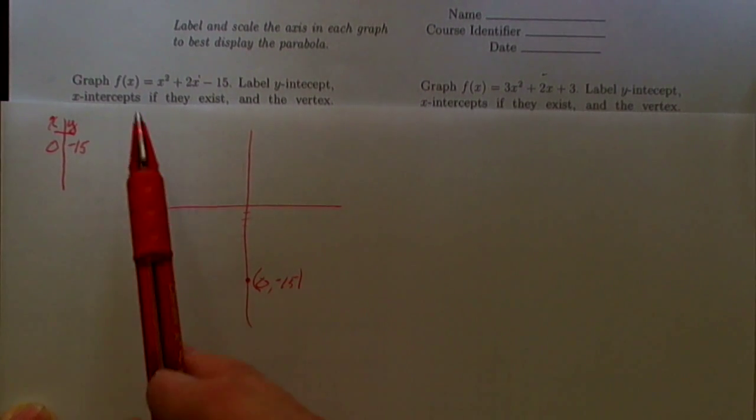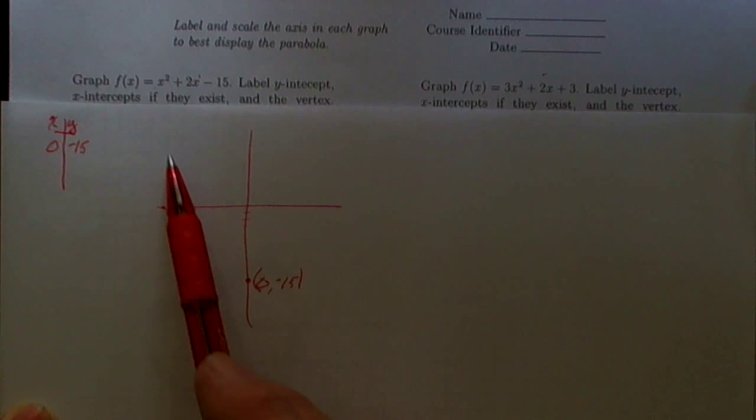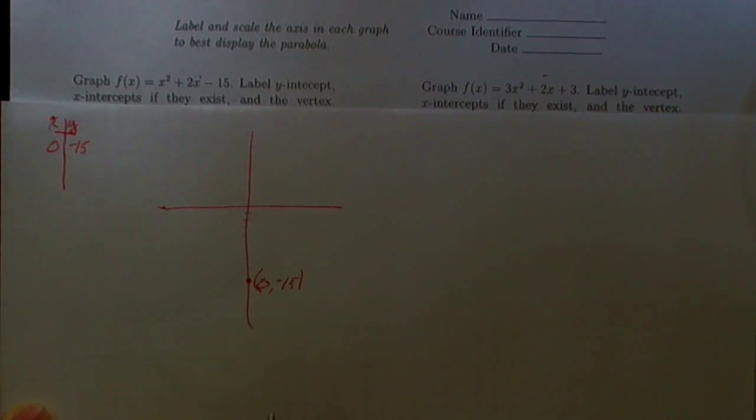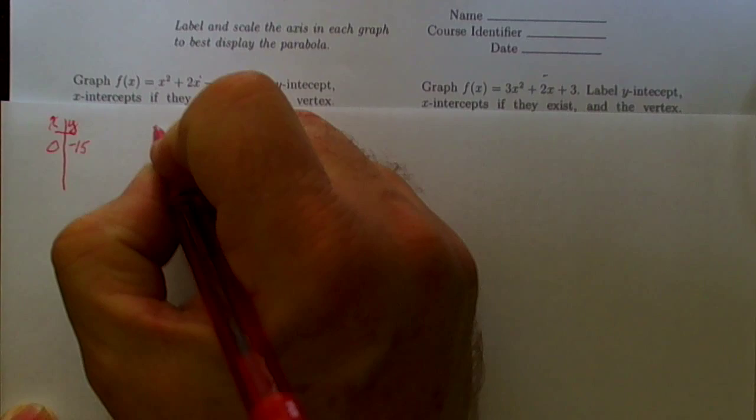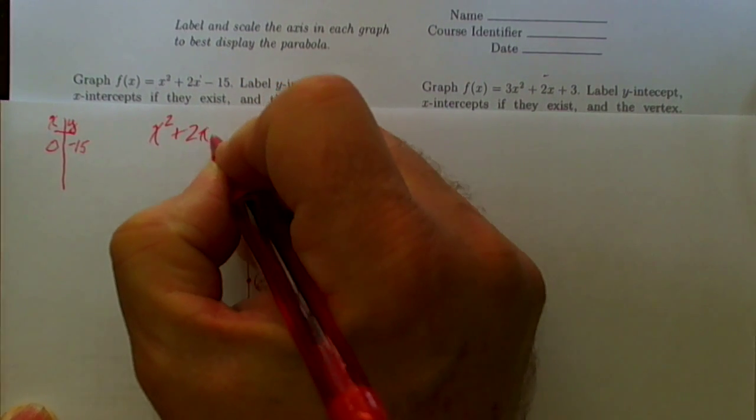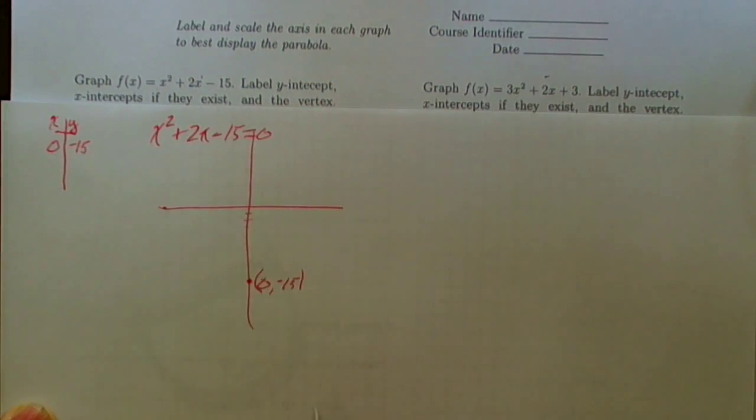Secondly we know that this is an opening up parabola because the leading coefficient is positive. So it might be a parabola over here, this might actually be the vertex, or there might be a parabola over here, so the vertex is here. But in any one of those cases, an opening up parabola going through this point must also have some x-intercepts. So we want to ask the question, well when is x² + 2x - 15 equal to zero?